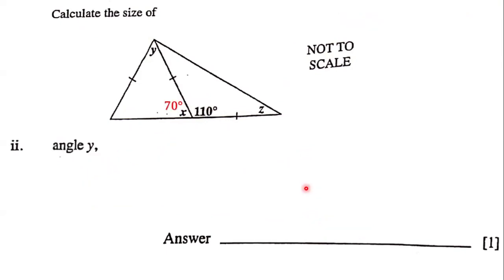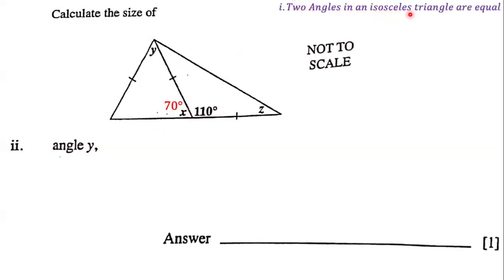Next, our goal is to determine the size of angle Y. We already know from the previous question that angle X is 70 degrees. We consider two useful geometric rules: first, that two angles in an isosceles triangle are equal, and second, that angles in a triangle add up to 180 degrees. These two rules are going to help us find the size of angle Y.